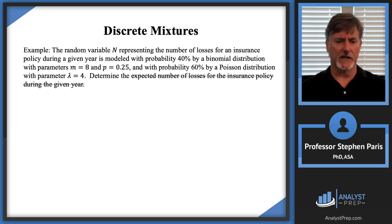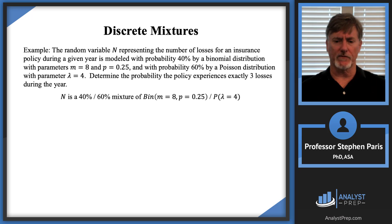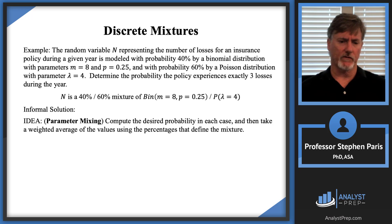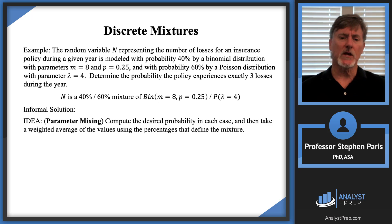Let's change the problem: instead of the expected number of losses, let's find the probability that the policy experiences exactly three losses. Again, this is a discrete mixture problem — a 40%-60% mixture. To calculate P(N=3), I mix that parameter: compute P(N=3) in each case and take a weighted average of those probabilities.